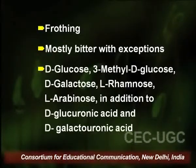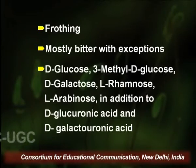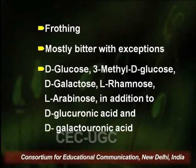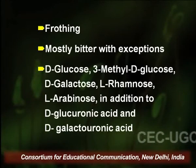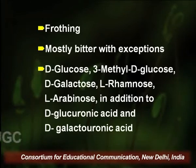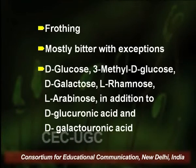Saponin glycosides have two structural components: the sugar part (glycon) and the non-sugar part (aglycon). Saponin glycosides have different kinds of sugar molecules attached to them. The most common ones are glucose, galactose, rhamnose, 2-methyl-D-glucose, and L-arabinose. In addition to these sugars, the aglycons of saponins — that is, sapogenins — are also found attached with glucuronic acid and galacturonic acid. All these molecules form the glycon part of the saponin glycosides.